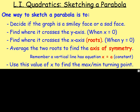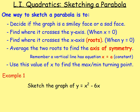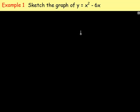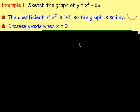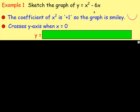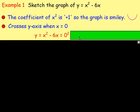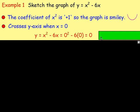Example one: sketch the graph of y equals x squared minus 6x. First, x squared has a positive coefficient, so the graph is going to look like a smiley face. To find where it crosses the y-axis, let x equal zero: zero squared minus 6 times zero equals zero. So it crosses the y-axis at the point (0, 0).